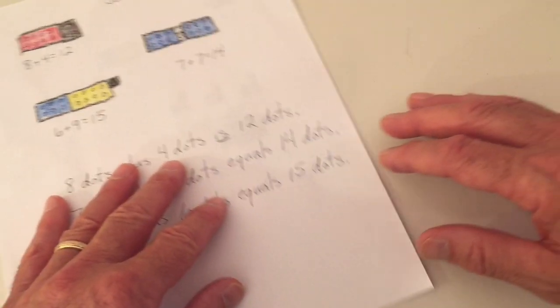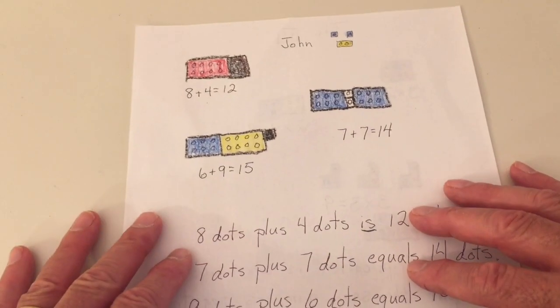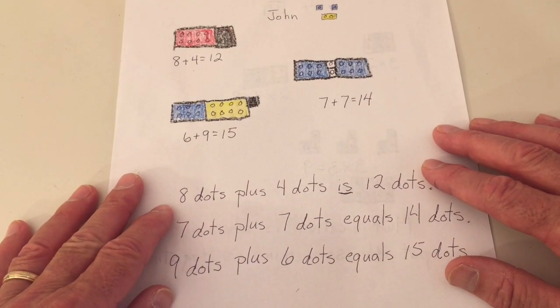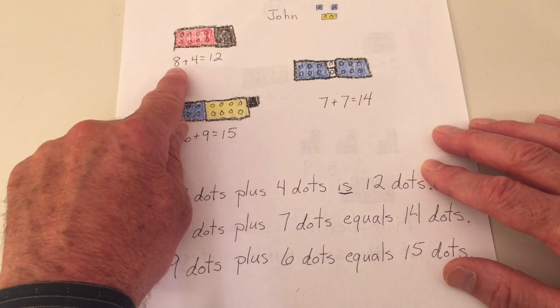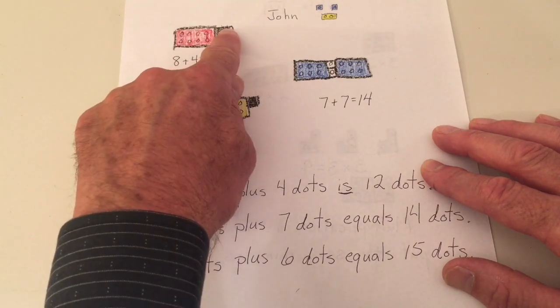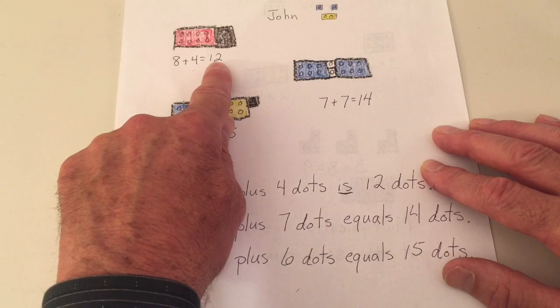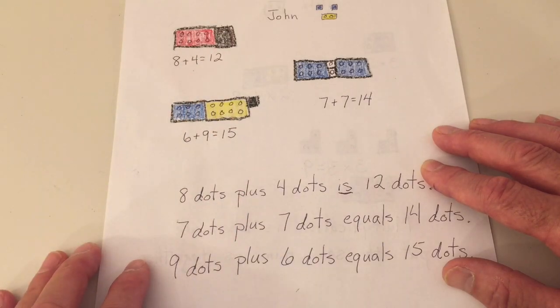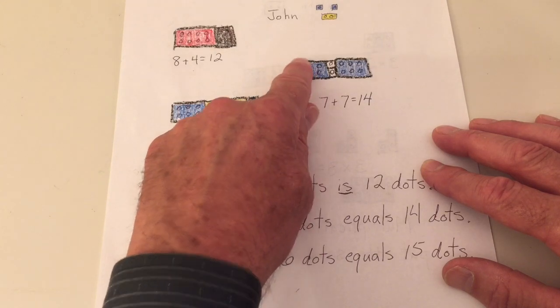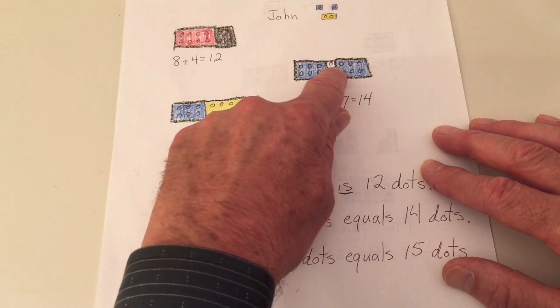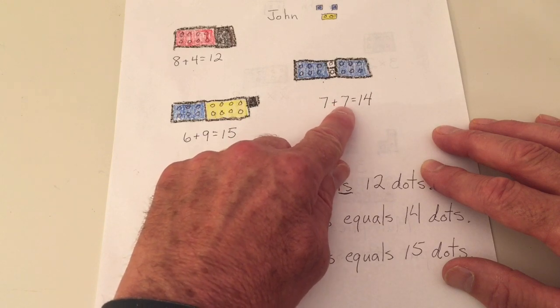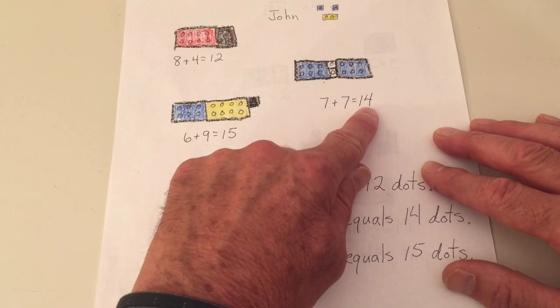Okay, let's see how I've drawn the work that I did. And first we had eight plus four equals twelve. And then we did seven: one, two, three, four, five, six. And then one of those ones was seven. So seven plus seven equals fourteen.